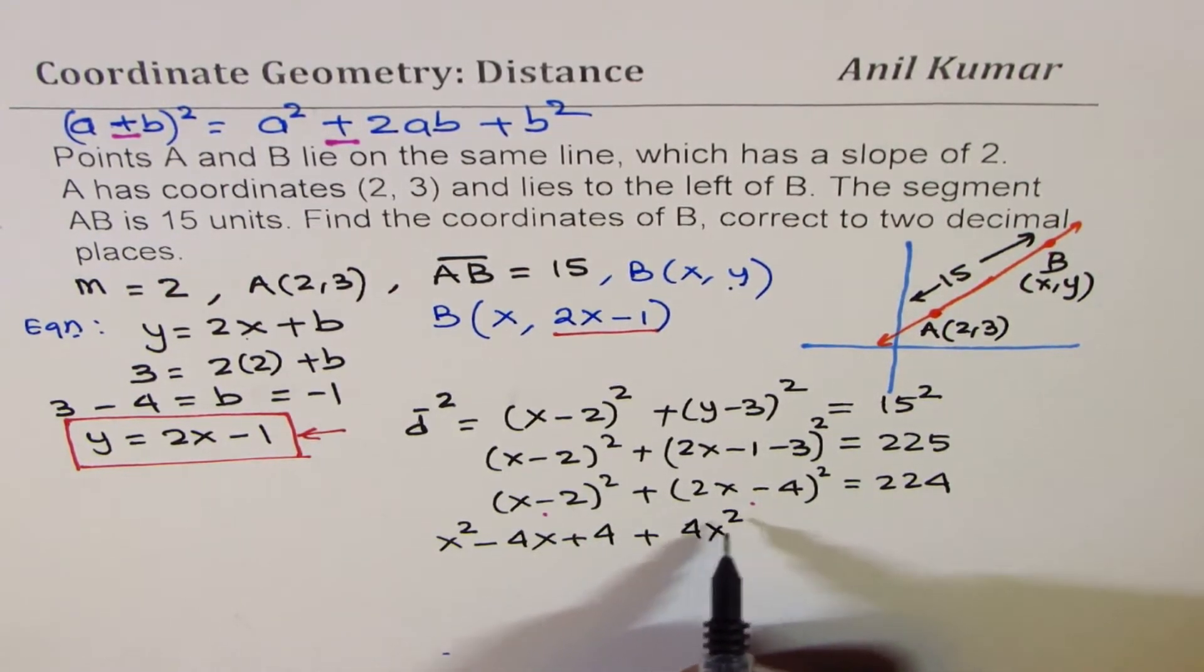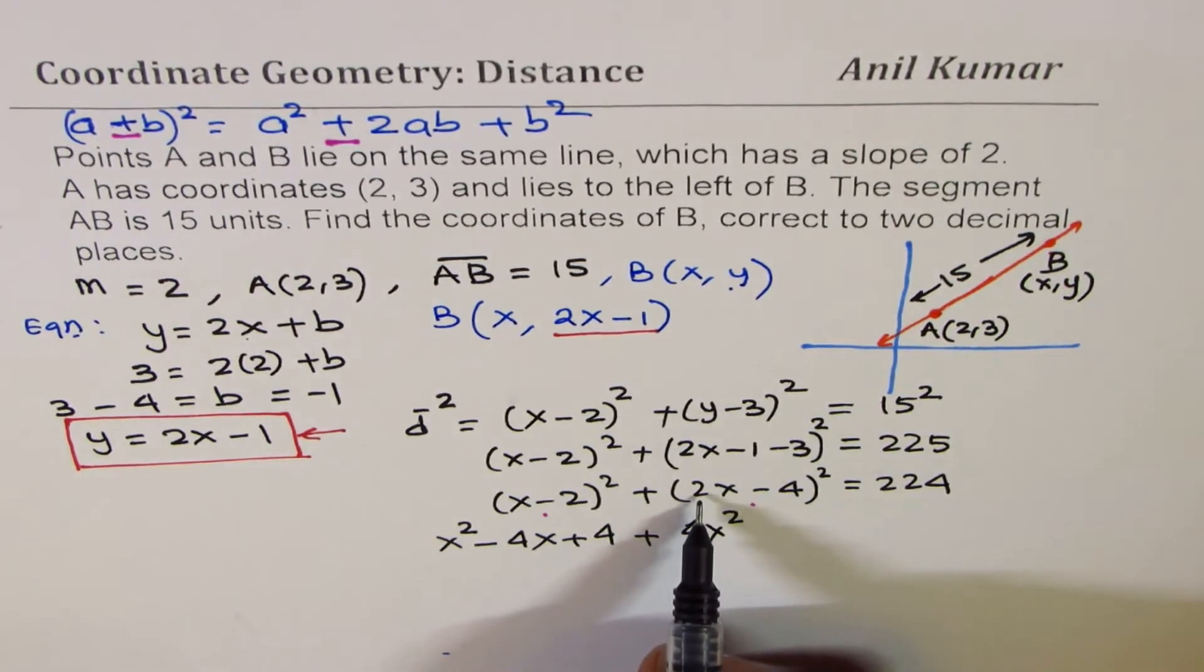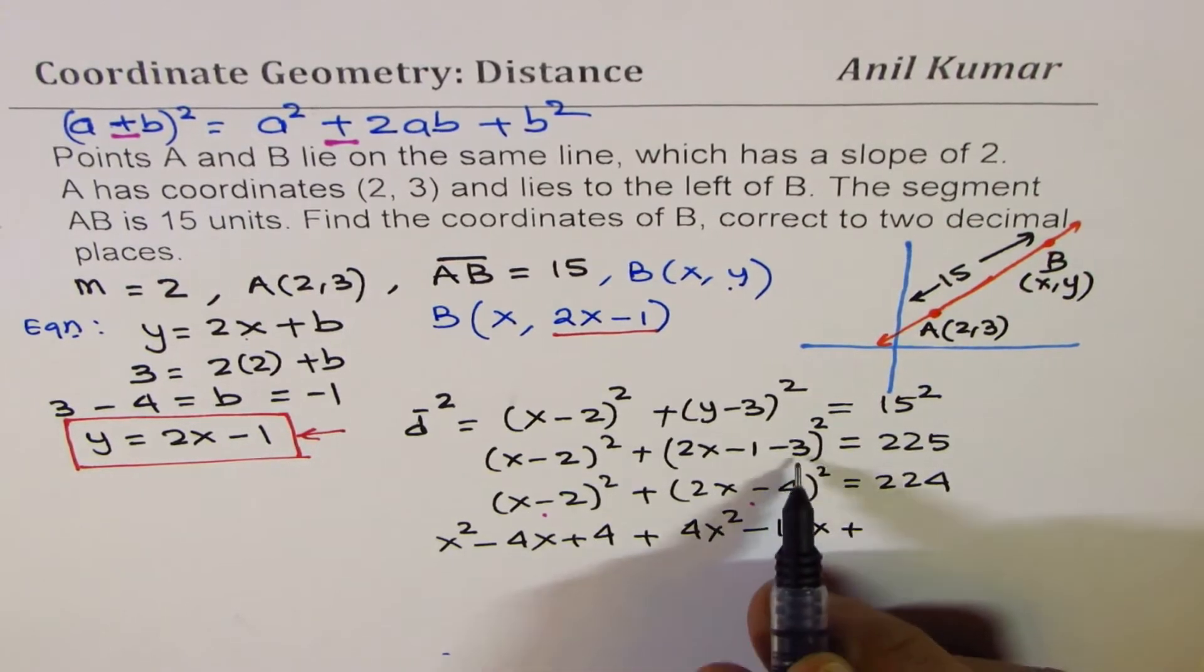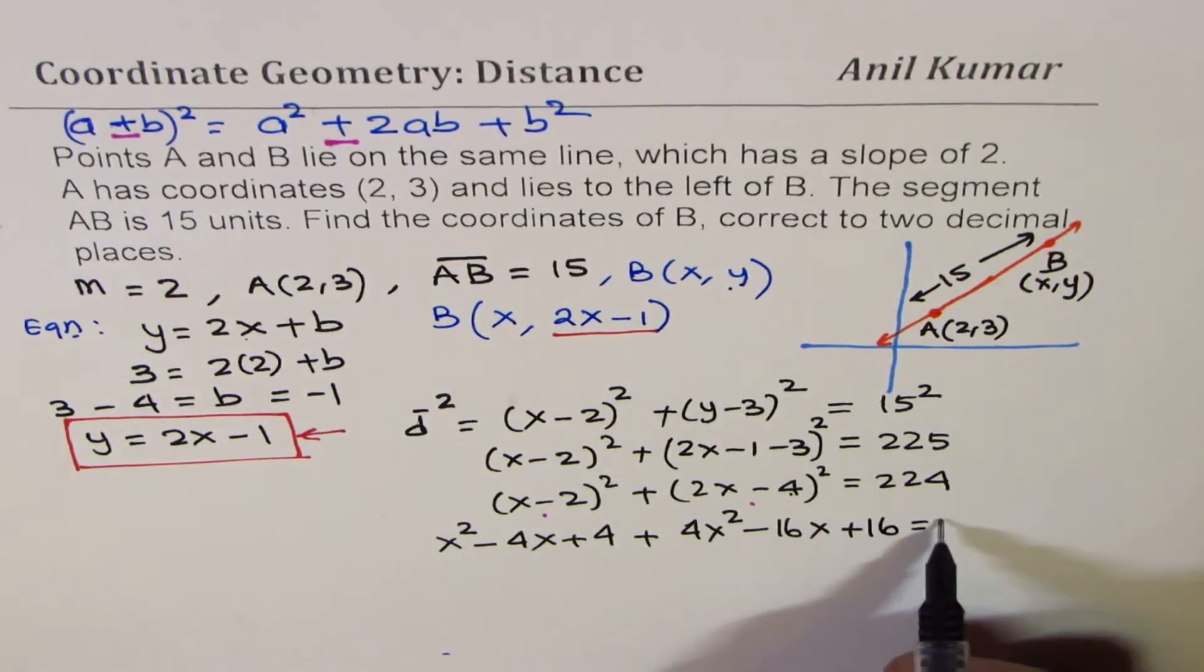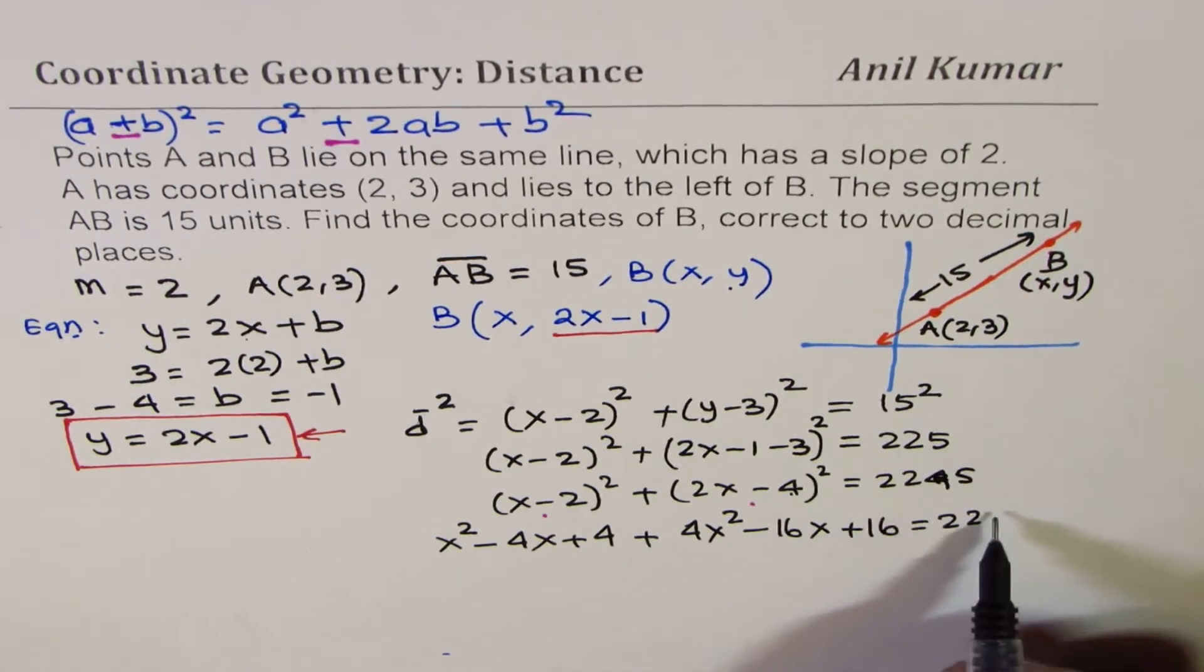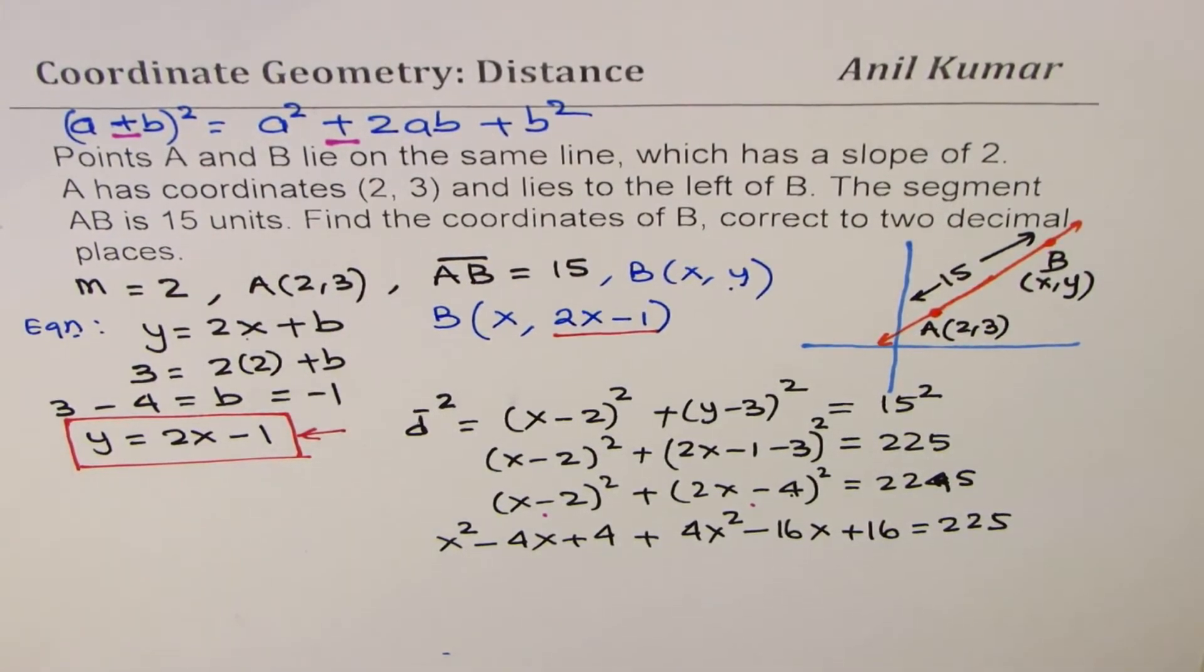You have to square 2 also, okay? 2 times ab means 2 times 4, 8, 8 times 2, 16, 16x plus 4², 4² is 16, equals 225, right? Equals 225.